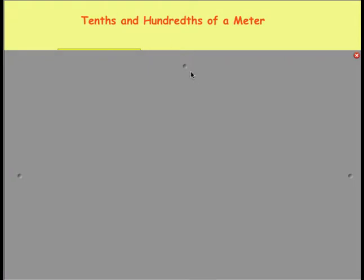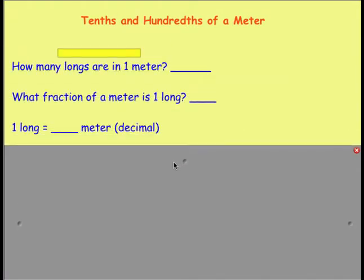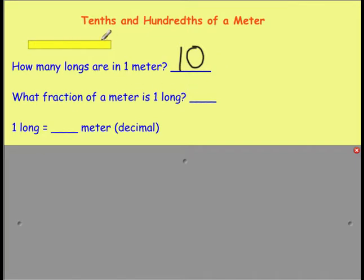Let's review. How many longs are in one meter? Remember, we laid them out all the way down to one hundred and it turned out to be ten of them — ten longs are in one meter. What fraction of a meter is one long? We had ten of them and we're looking for one. So if ten was our whole, part of it is just one long, so our answer would be one tenth of a meter.